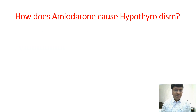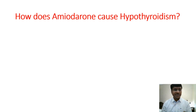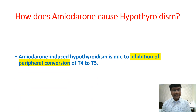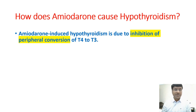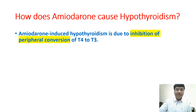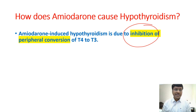How else does amiodarone cause hypothyroidism? The other mechanism is inhibition of the peripheral conversion of T4 to T3. The final step in T3 synthesis is peripheral conversion, where T4 is converted to T3 by the enzyme 5-deiodinase. Amiodarone inhibits this peripheral conversion of T4 to T3, thereby causing hypothyroidism.